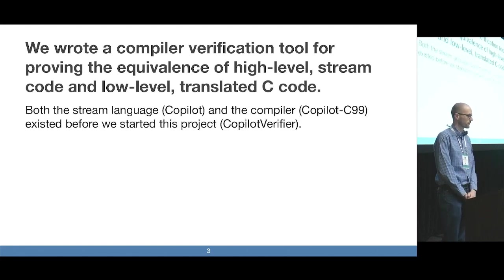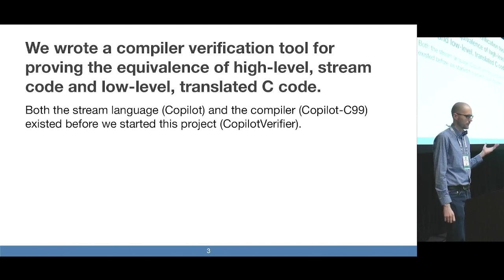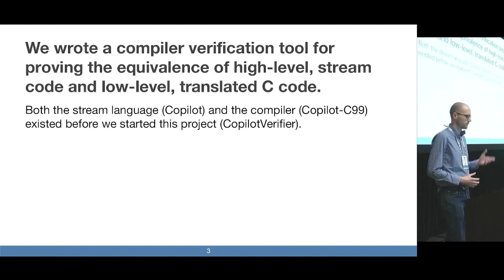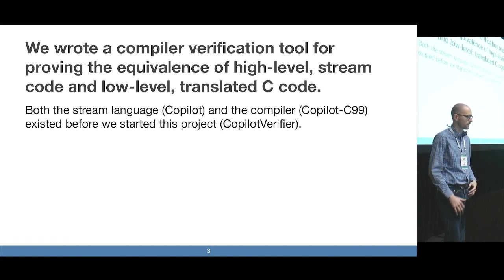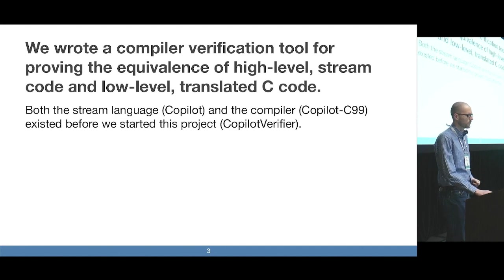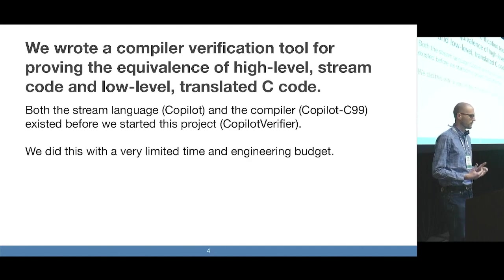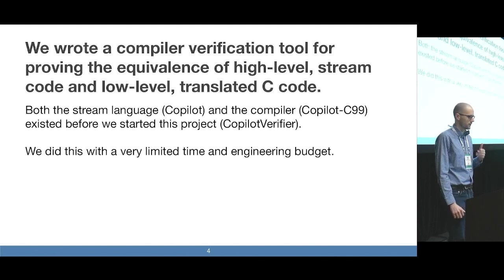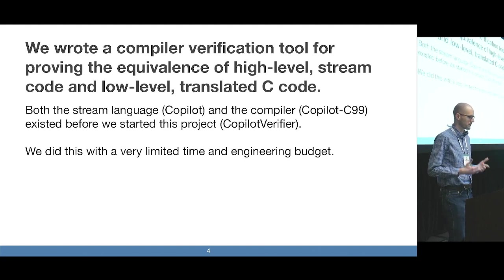One thing that is interesting about our project is that both the source language, which is called Copilot, and the compiler for it, which is called Copilot C99, both of these existed well before we ever started the project. Moreover, we were not at liberty to make extensive changes to these in pursuit of verifying them. We only had about one year to complete this project on a pretty small team of engineers.